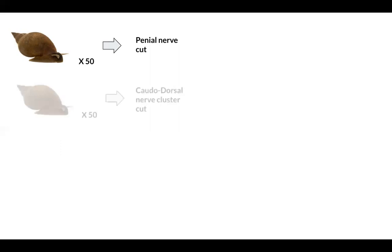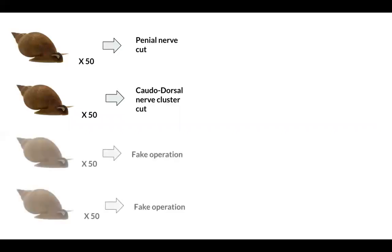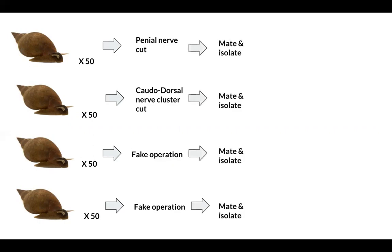In treatment two, another 50 snails will have their quarter dorsal nerve cluster cut. Cutting this nerve prevents egg production, so these snails will mate as males. Treatments three and four will be control groups where the snails are operated on but no nerves are cut. In the treatment groups, each snail will mate with normal Limnaeus stagnalis that have not been operated on. After mating, the snails will be isolated and their body masses monitored weekly.